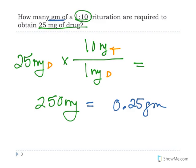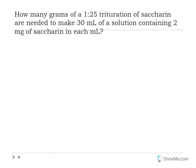So let's look at one other example. In this case, we're being asked to use a 1 to 25 trituration of saccharin to make 30 mils of a solution containing 2 milligrams in each mil. So again, the first part is figuring out how much drug do we need?